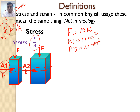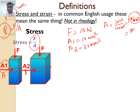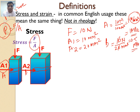What will be the stress on beam A and beam B? For beam A: 10 newtons divided by 10 mm² equals 1 newton/mm², which is 1 megapascal. For beam B: 10 newtons divided by 20 mm² equals 0.5 megapascal. So when we apply the same force to both beams, beam A experiences more stress than beam B because of its smaller cross-sectional area.